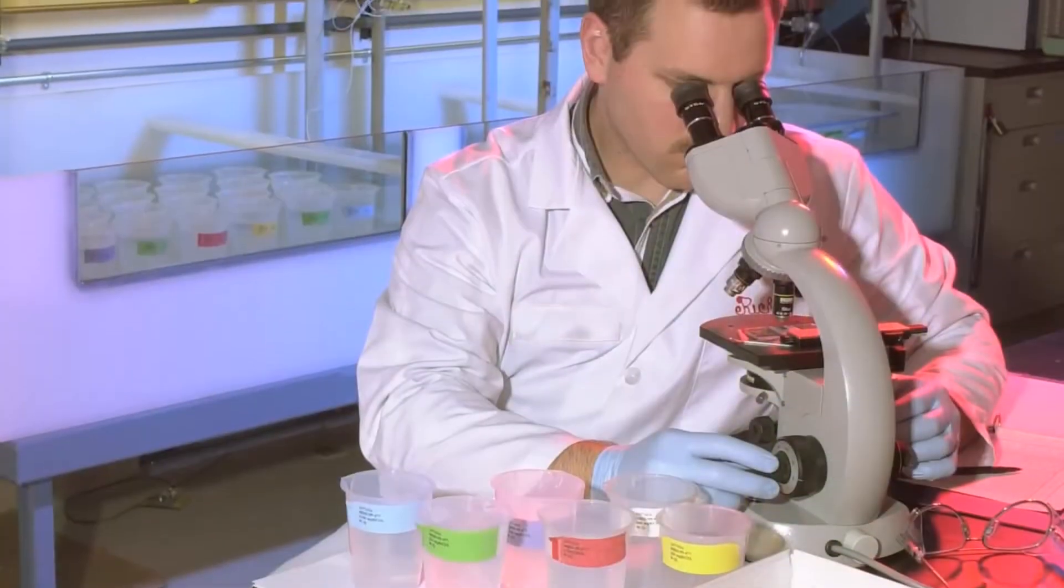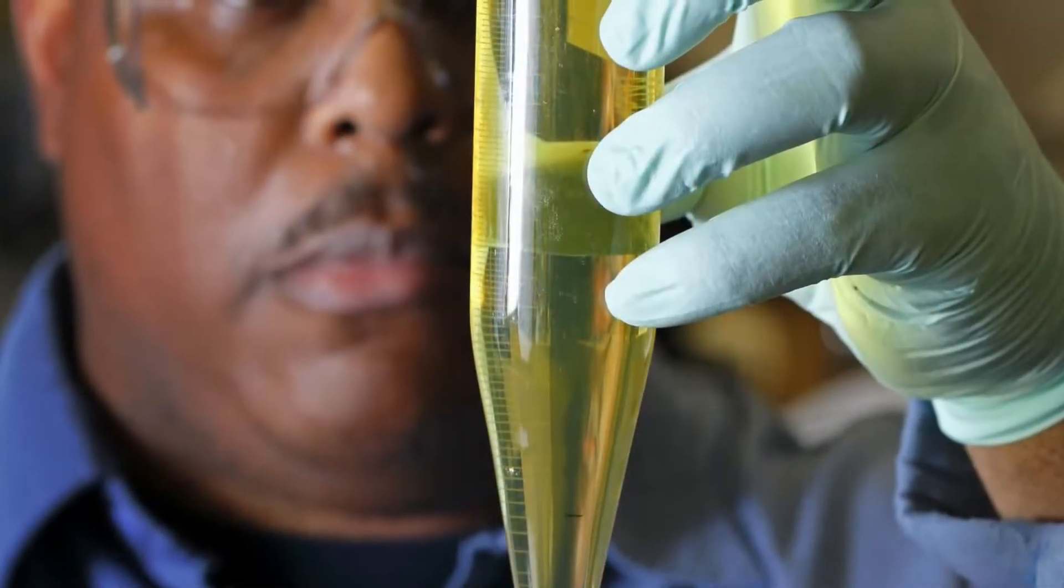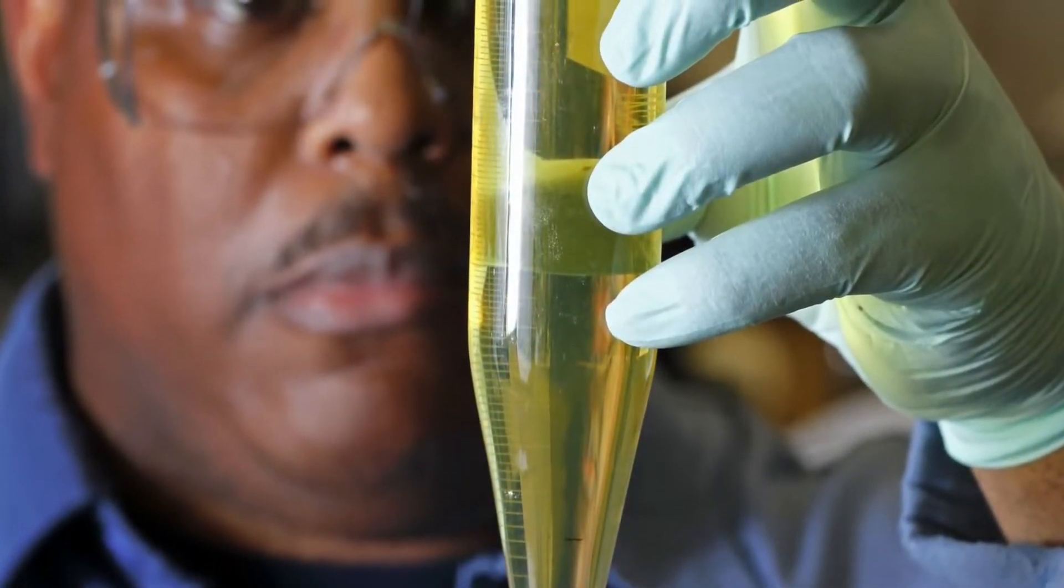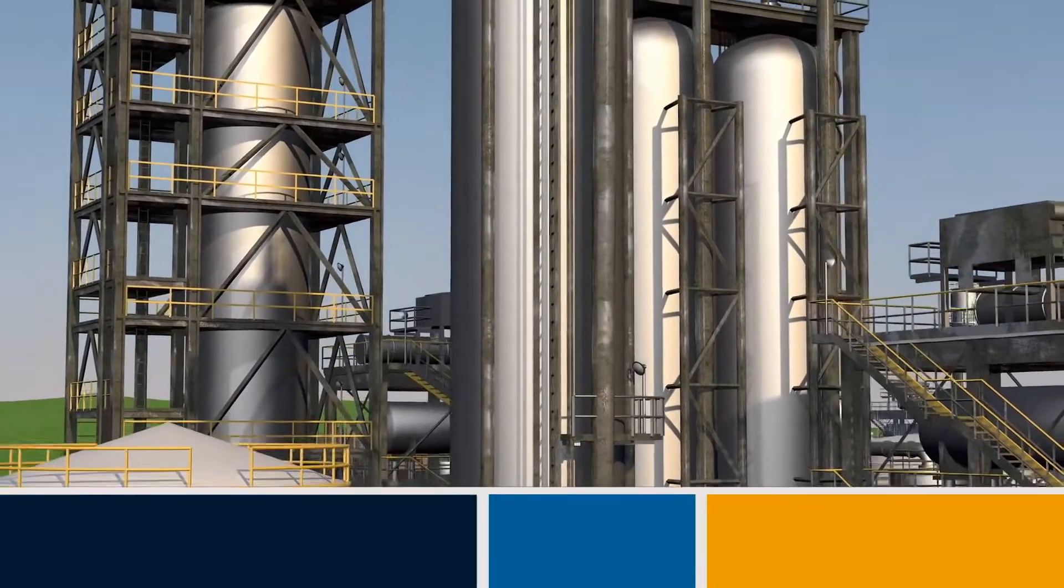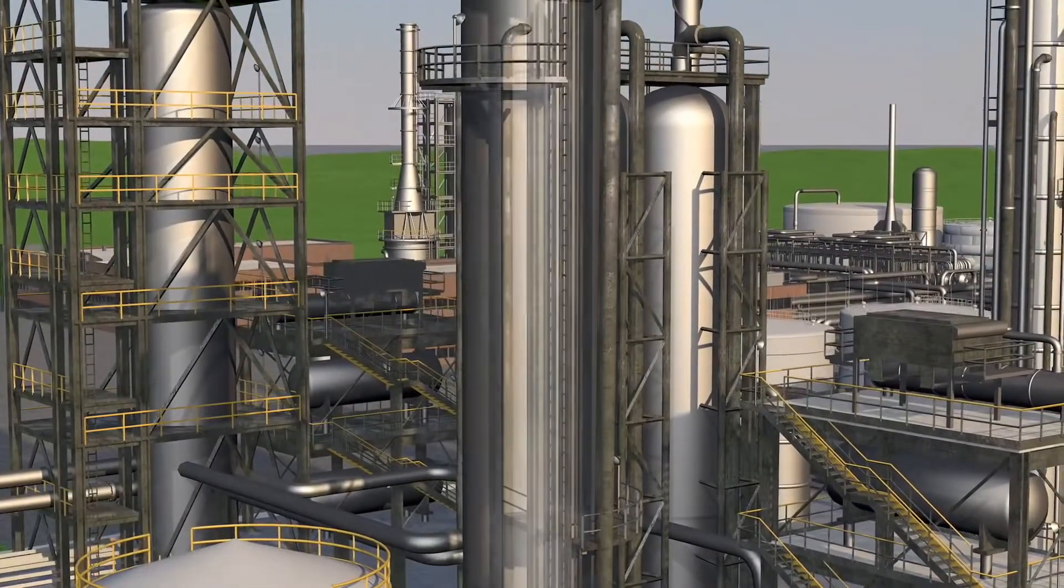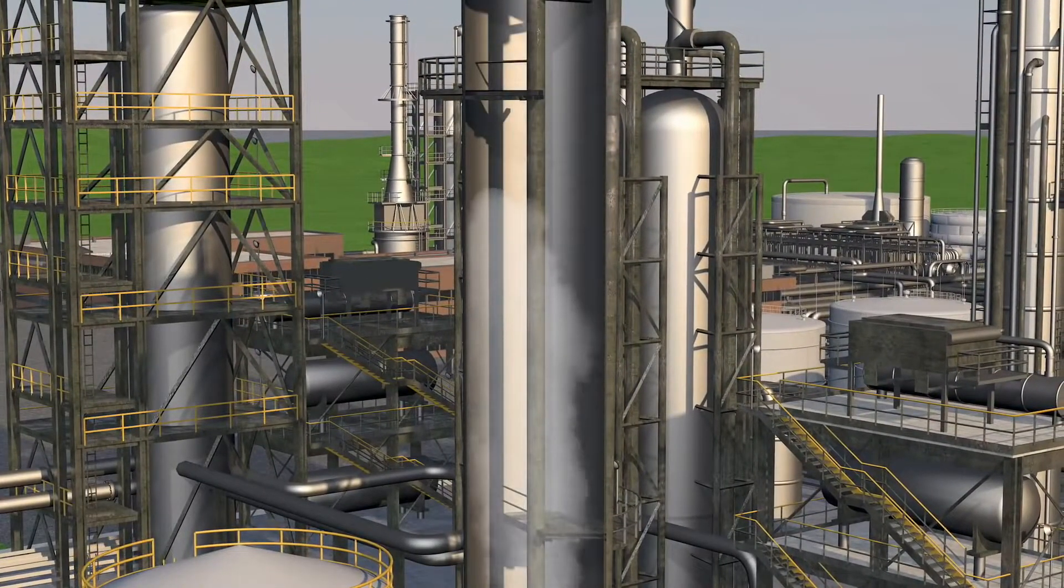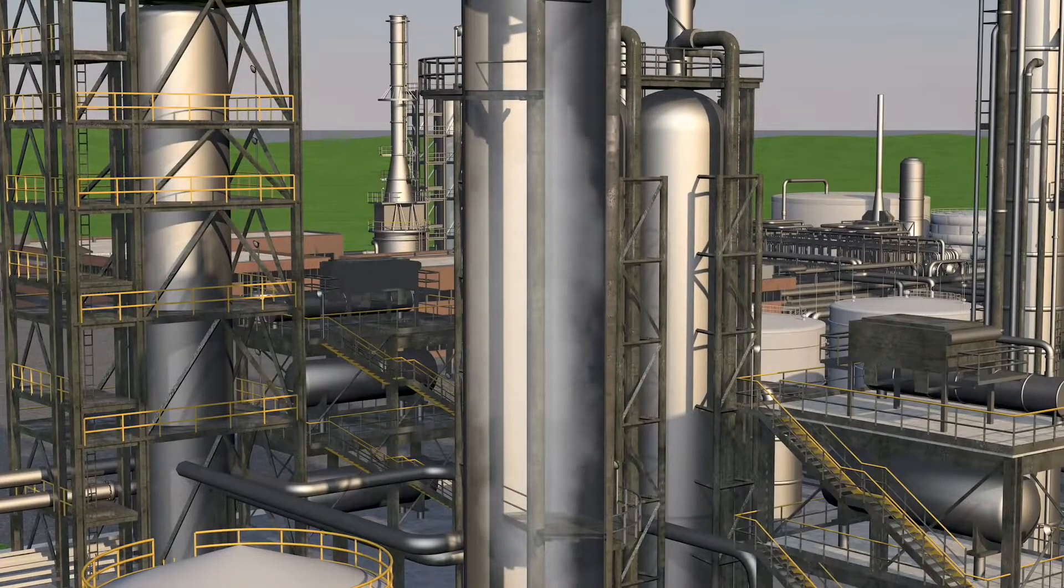Here, engineers and scientists have figured out how to turn raw crude oil into the valuable fuels, lubricants, and components we need to make millions of products. Refining begins with a process called distilling. After oil is superheated, it becomes vapor. The vapor is fed into the distillation unit.